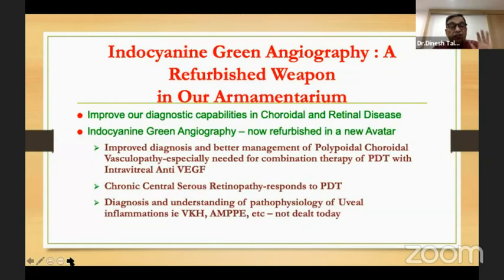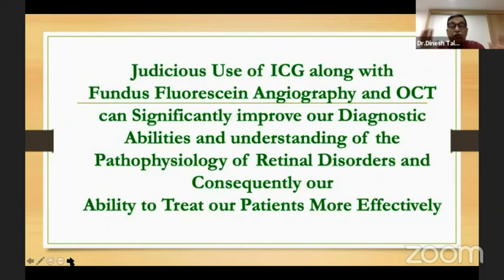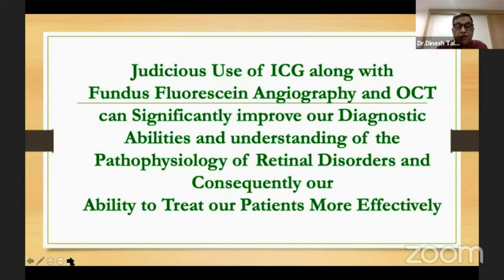So ladies and gentlemen, ICG improves our diagnostic capabilities in choroidal and retinal disease. It has been refurbished and can help in management of polypoidal choroidal vasculopathy, chronic central serous retinopathy, and many inflammatory choroidal diseases. If we use this judiciously, along with fluorescein angiography and OCT, we can significantly improve our diagnostic capabilities and understanding of the pathophysiology of these conditions. Thank you very much.